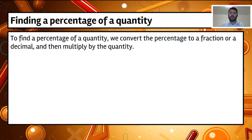In order to find a percentage of a quantity, first of all, whatever percentage we're looking at, we need to convert that percentage into a fraction or a decimal, and then we need to multiply by the quantity.